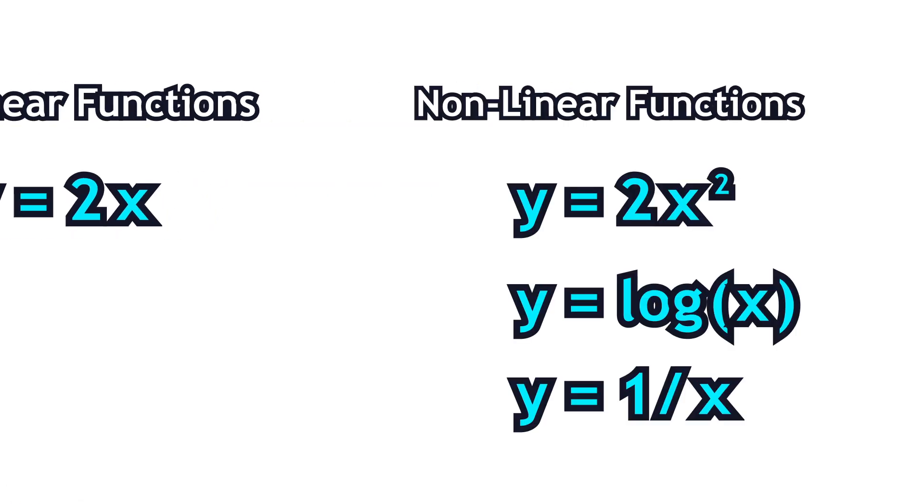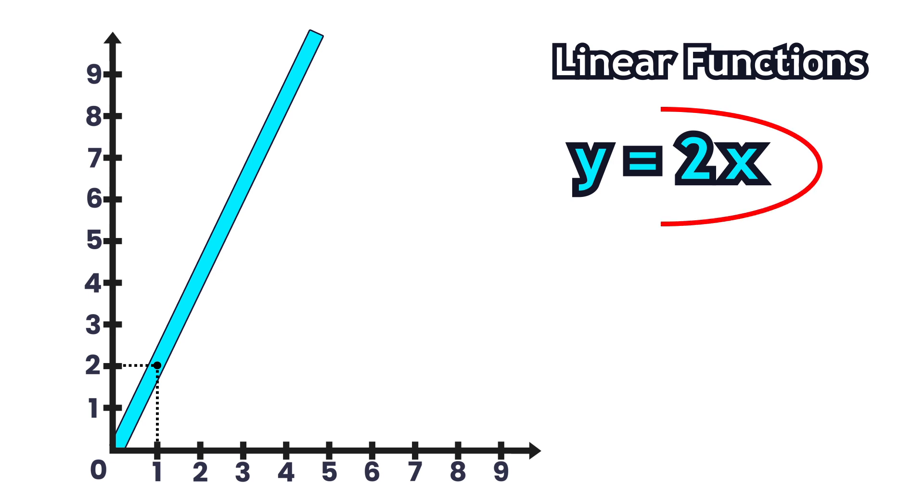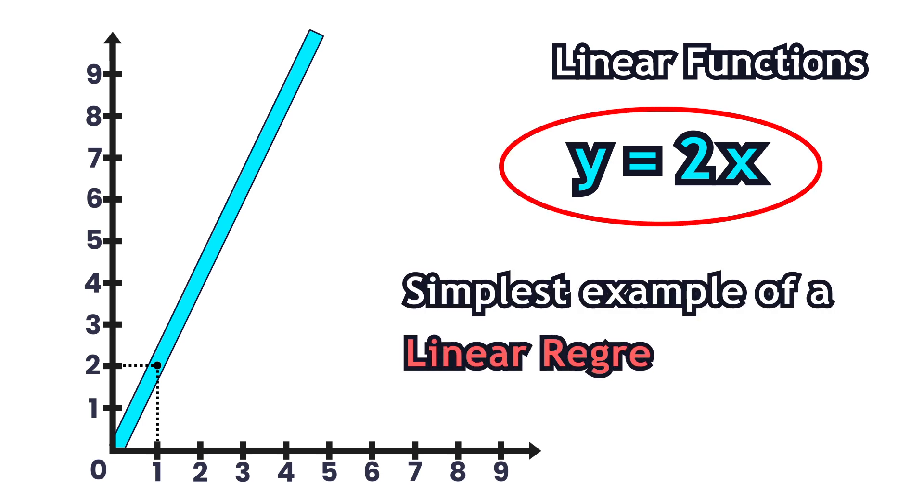Note that the equations of these forms are not linear. So, y equals 2 times x is the simplest example of a linear regression formula.